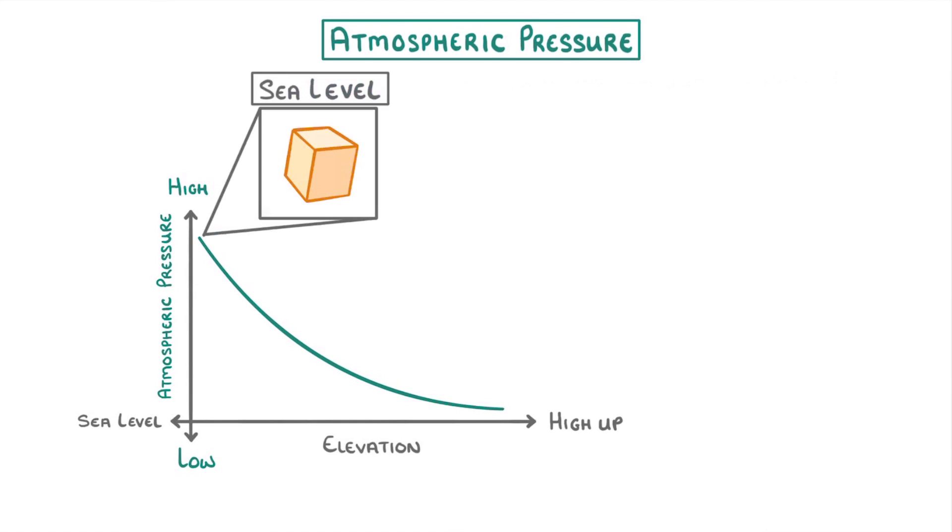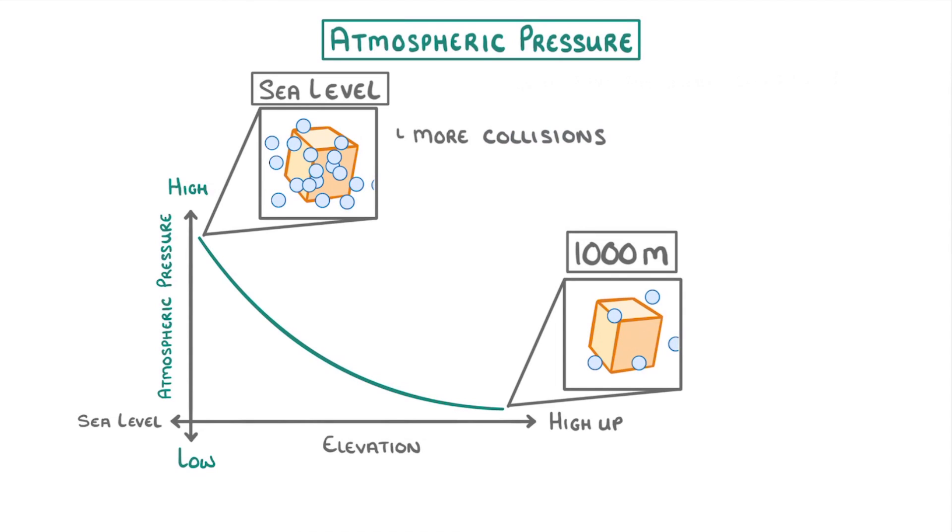If we compare an object at sea level to the same object at 1000 meters up in the air, then there's going to be a lot more air particles around the object which is at sea level. And this means that there will be a lot more collisions with the surface of the sea level object than there would the object which is really high up.